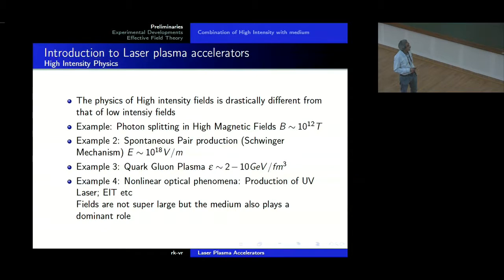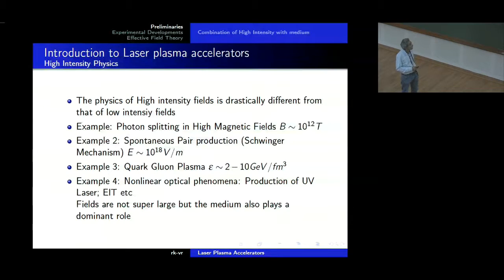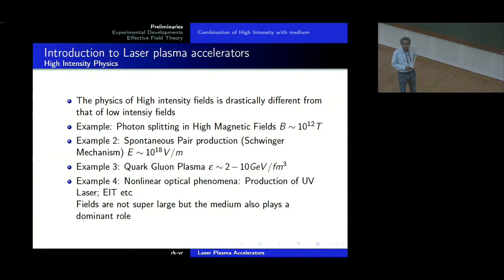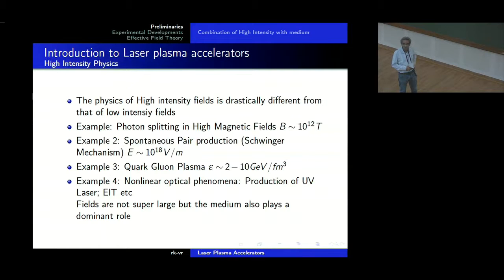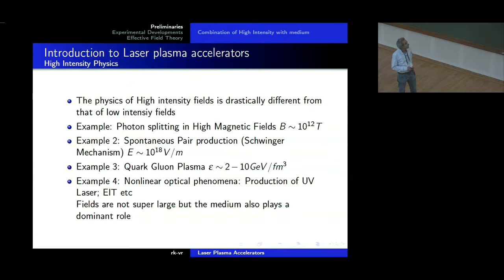The last one is not actually very different from the previous ones, because here we have a medium explicitly in place — the physical medium — whereas in all the other examples, vacuum acts as a medium. It is only in the lowest order, when we do a calculation, that all our equations behave in a linear fashion. The minute we switch on higher order perturbations, the non-linear effects start taking place, because it is not additive in the fields anymore. Fields need not be super large because medium also plays a very important role.